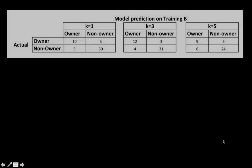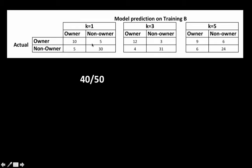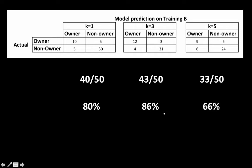A few fine points worth considering: let's go back to our classification confusion matrices for the training partition on various values of k. We showed results for k equals 1, 3, and 5 — hypothetical results. For k equals 1, we got 40 out of 50 correct, an 80% correctness. For k equals 3, we had 43 out of 50, which is 86% correctness. For k equals 5, we had 33 out of 50, which is 66% correctness. So we said k equals 3 gives us the highest performance at 86%.